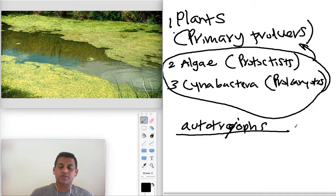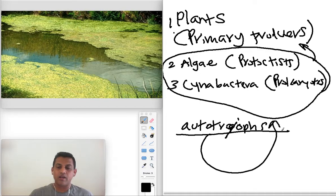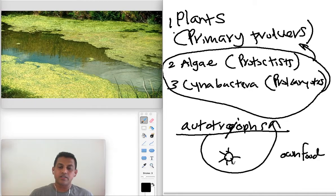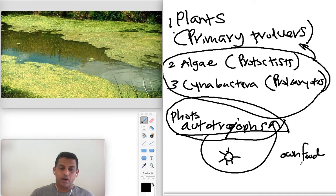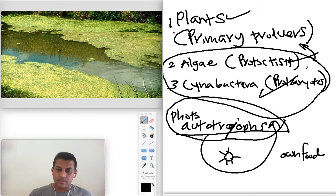So all these plants, algae, cyanobacteria, since they can make their own food, we call them autotrophs. Why do we call them autotrophs? They can make their own food. Since they are using sunlight energy, we call them photo autotrophs. So who are the photo autotrophs? The organisms that can make their own food using sunlight energy. That's our plants, algae, cyanobacteria.